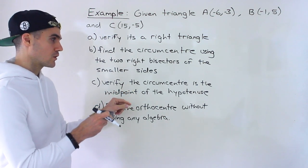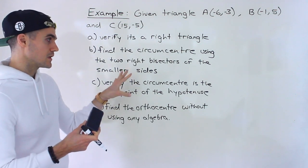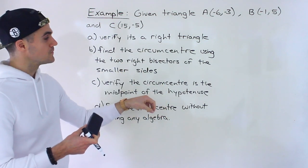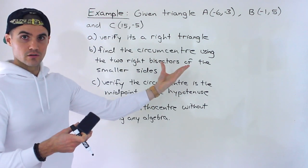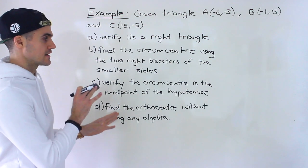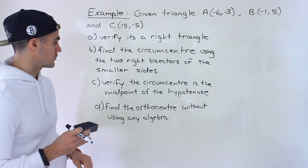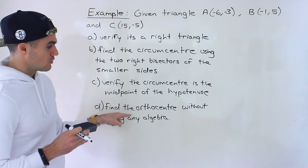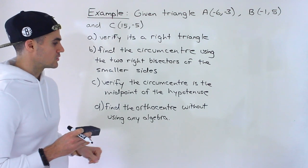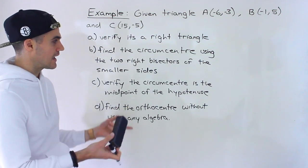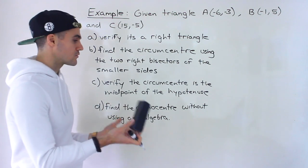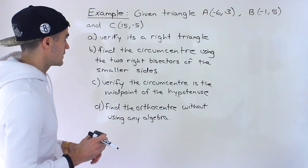In part C, we have to verify that the circumcenter found in part B is the midpoint of the hypotenuse. We went over a video discussing the different cases of the circumcenter — it could be within the triangle, on the triangle if it's a right triangle, or outside the triangle if it has an obtuse angle. We're dealing with that second case in more detail here. In part D, we have to find the orthocenter without using any algebra, which will be really easy — I'll show it through a diagram.